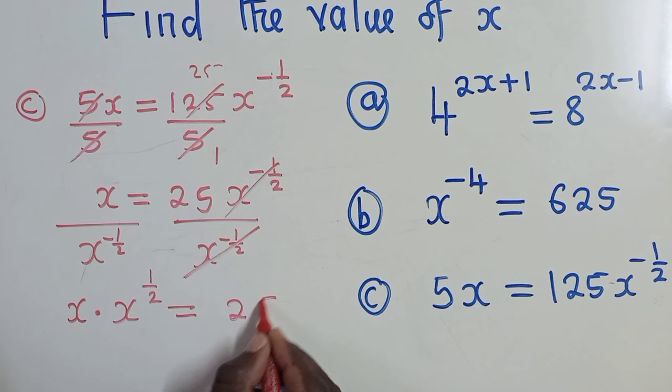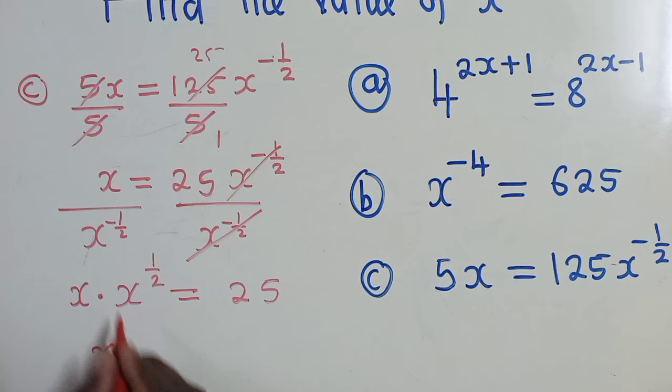Okay, so now the laws of indices here, when you work out, you're going to have 3 over 2, because the bases are the same, so you add the powers. 1 plus 1 over 2, that will be 3 over 2, which is equal to 25.